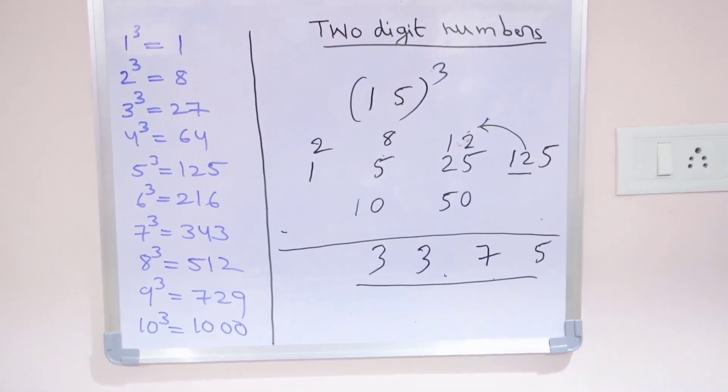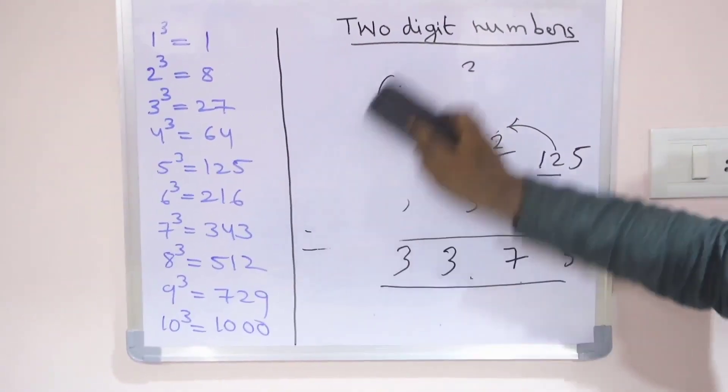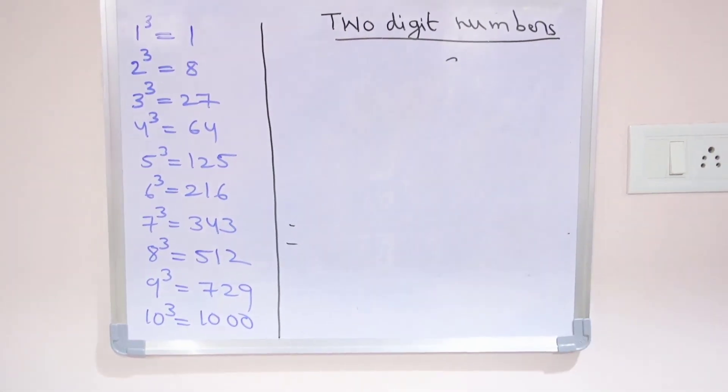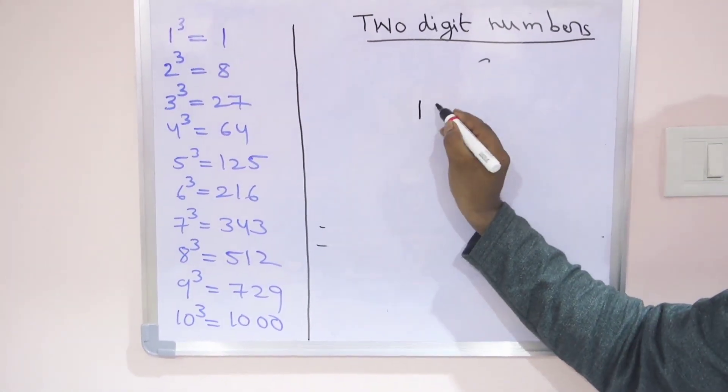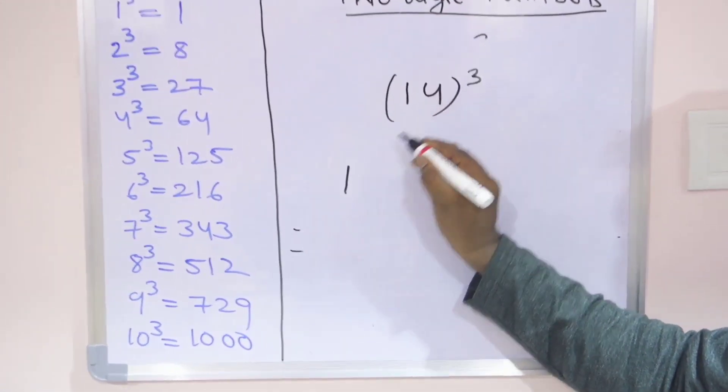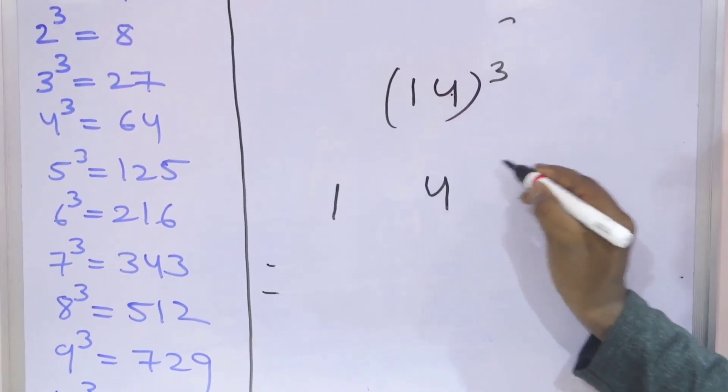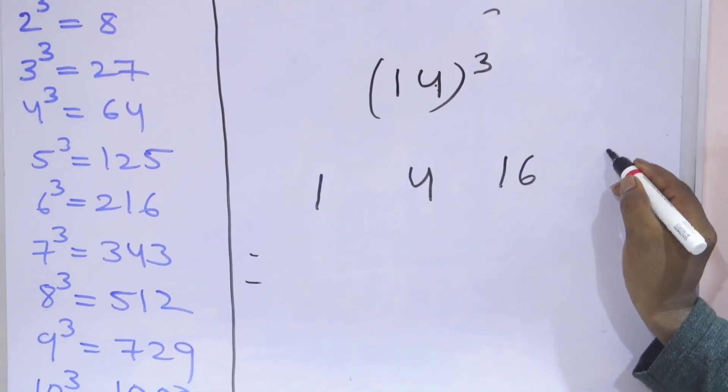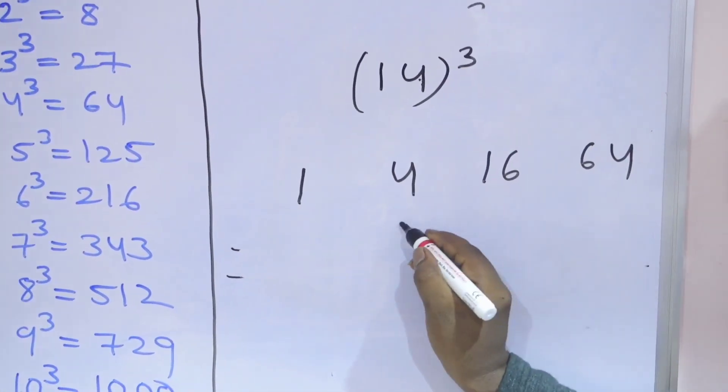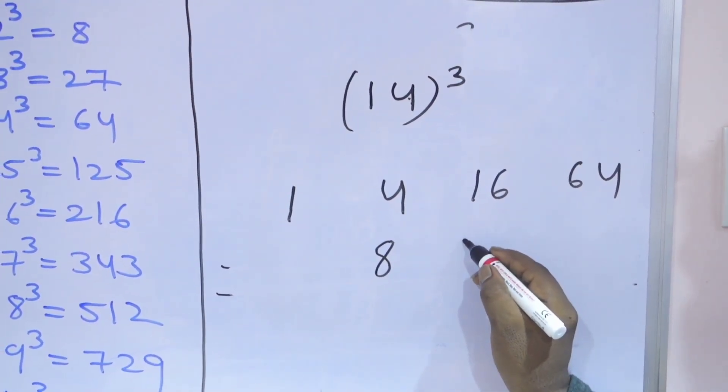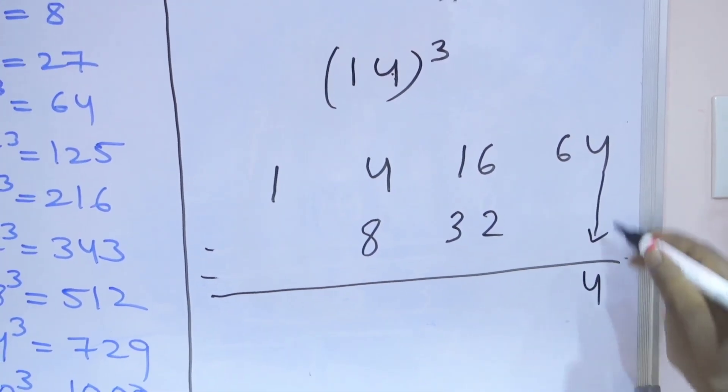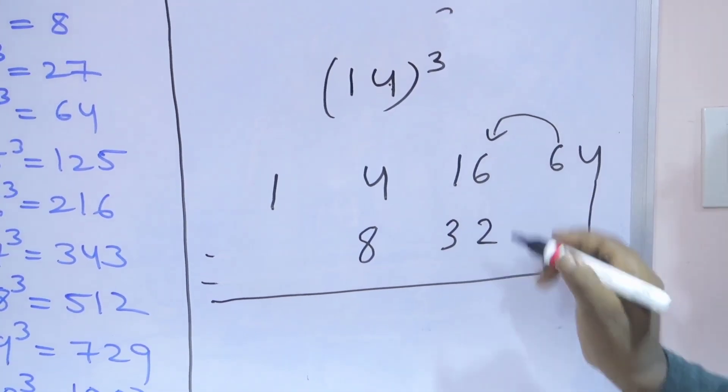Next question, 14 whole cube. Observe it is starting with 1. 14 cube: first write 1 only, next 4 times 1 is 4, 4 times 4 is 16, 4 times 16 is 64. Next step: double the numbers. 4 double is 8, 16 double is 32.